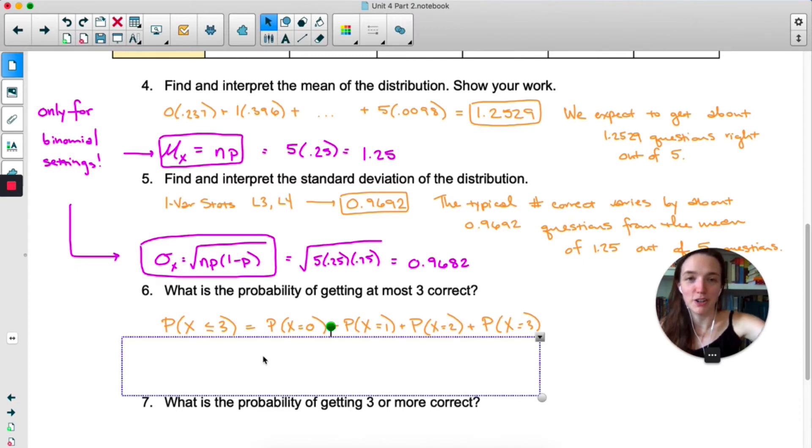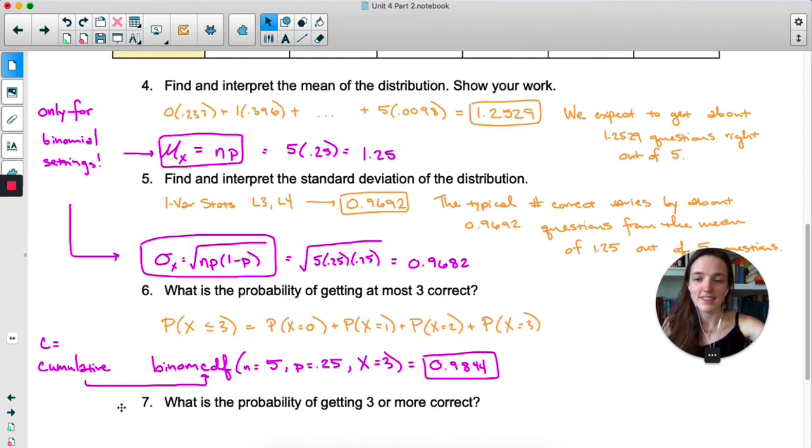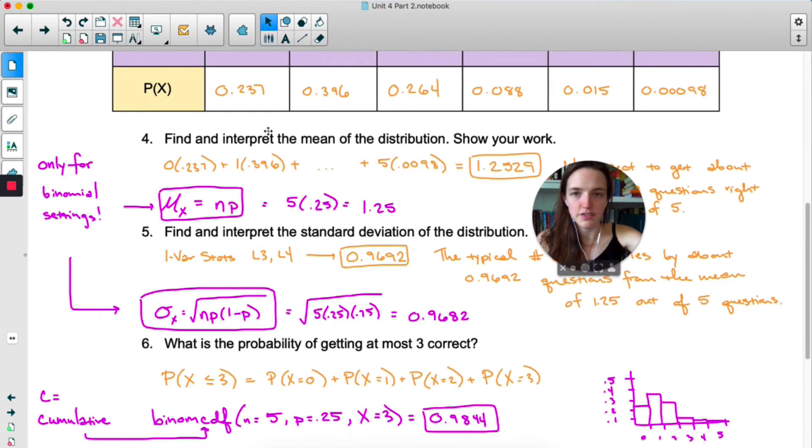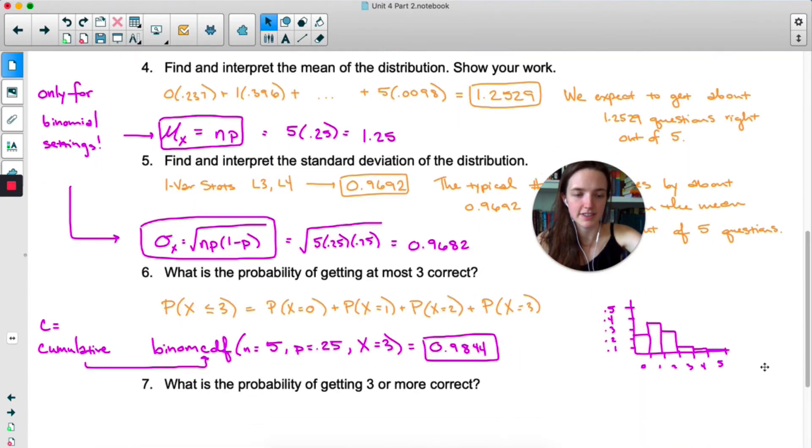It's called binom cdf. That c stands for cumulative. What binom cdf does is it adds up all the probabilities up to and including the x value that you put in. So here's a quick sketch of these probabilities from this quiz example.